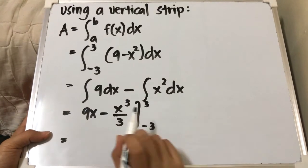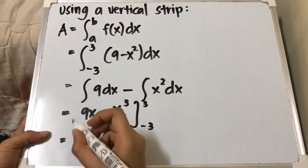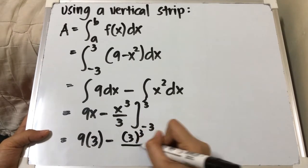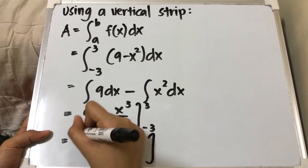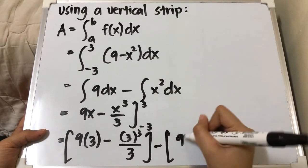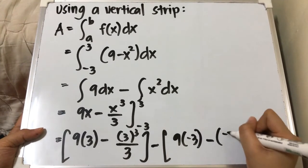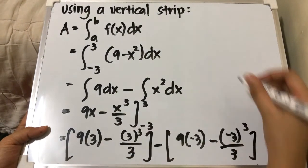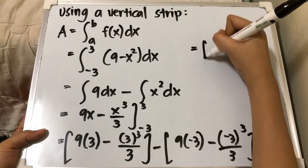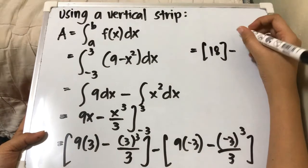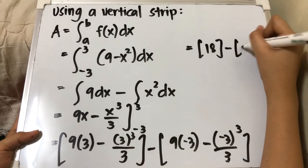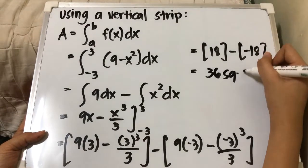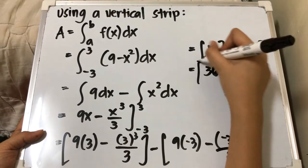Substituting our limits: 9 times 3 minus 3³ over 3, minus [9 times negative 3 minus (negative 3)³ over 3]. This is equivalent to 18 minus negative 18, giving us positive 36 square units — the same answer as before.